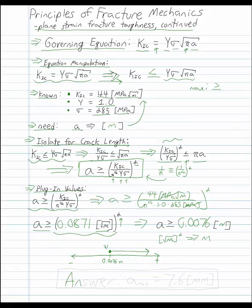So our answer then, for a crack length minimum, is going to be 7.6 millimeters. So if the airplane component has a crack length of 7.6 millimeters, it runs the risk of failing. That's the minimum we require.